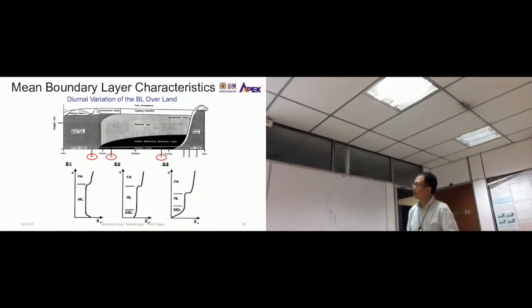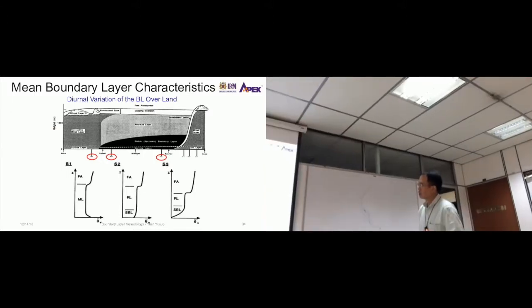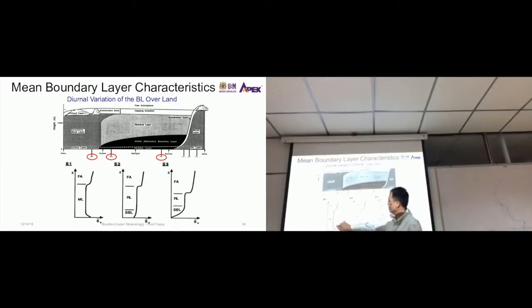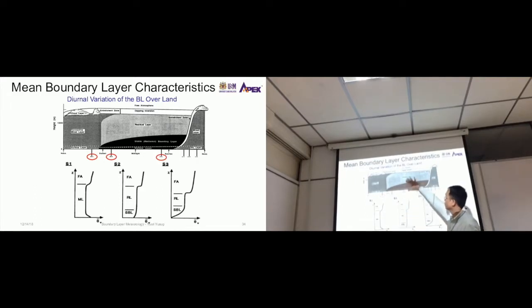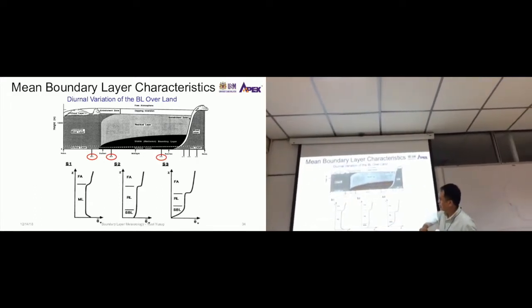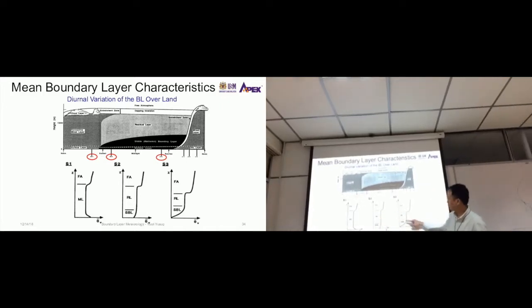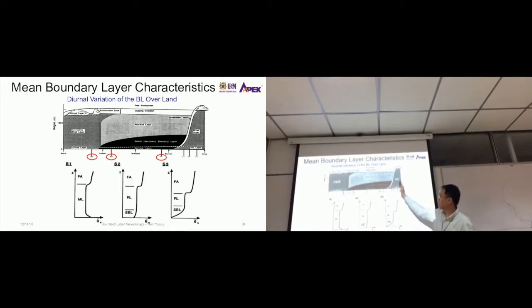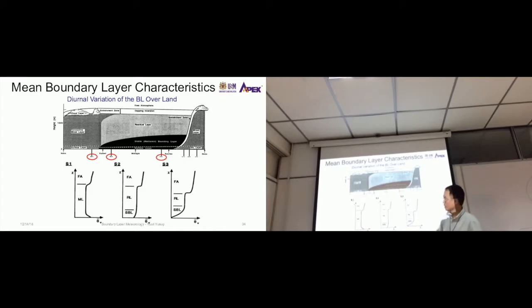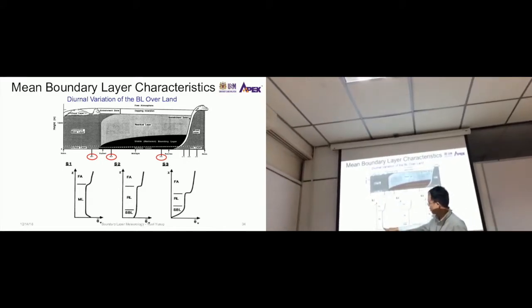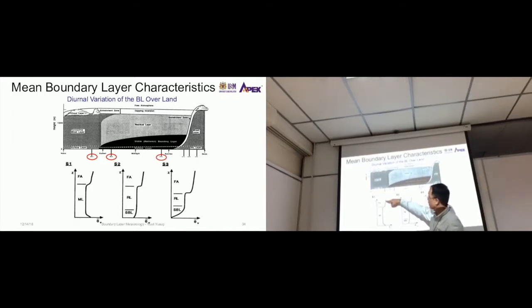Here is the diurnal variation of the boundary layer over land. This is more detail than the diagram just now. The y-axis is height, the x-axis is temperature, or specifically virtual temperature—temperature not affected by water content. You notice that the variation is different between the regimes. For this one, you see the temperature profile starts to decrease, then becomes straight up, and then when it goes up to the free atmosphere, this is the profile.